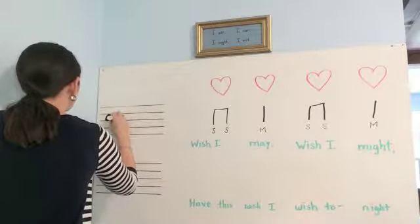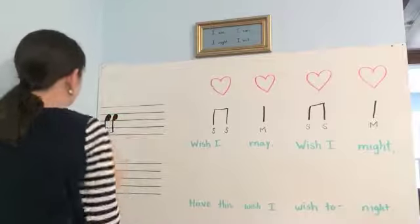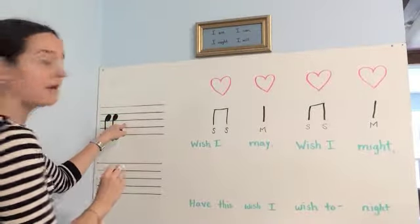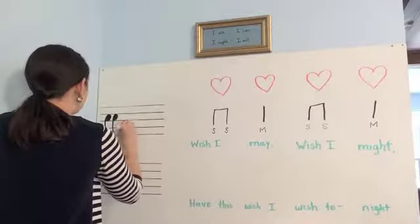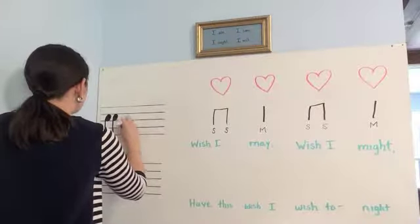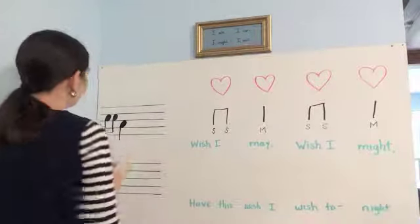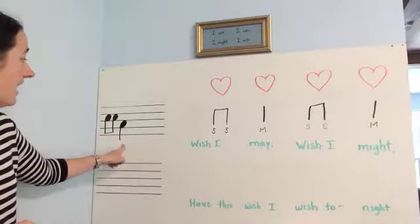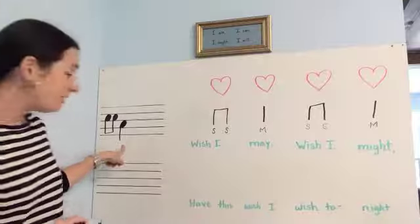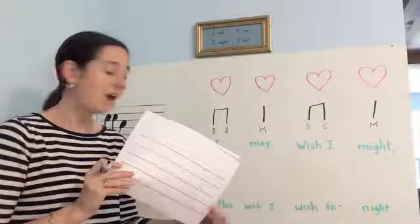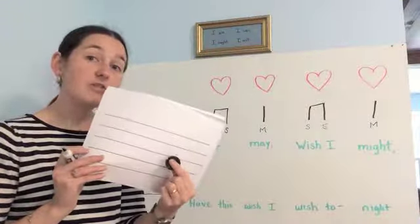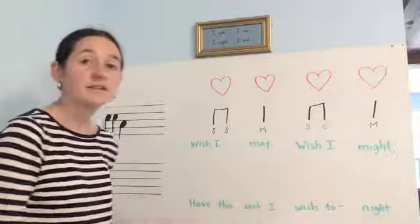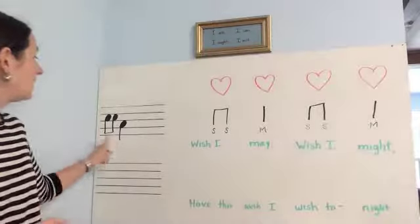So I'm going to do my notes. You can put an S and an M on the spot. So this is our "wish I," and then here's going to be our "may" — and that's just a ta, that's a quarter note. So it's going to look like that. We have "wish I may." And if you have your staff paper and your checkers, you can do this part along with us, or you could even just draw it on some paper.